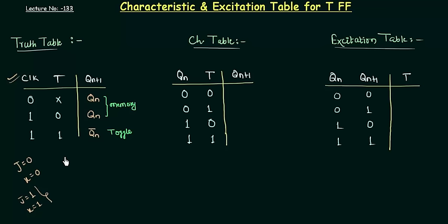This was the truth table derived in the last presentation. Now in this presentation we will find out the characteristic table and the excitation table for the T flip-flop, and use them in flip-flop conversions as well as the designing of counters. If you are following my lectures you can do it by yourself, as we have done the same thing for SR, D, and JK flip-flops. If you are new, let me explain how to find out the characteristic table and the excitation table.